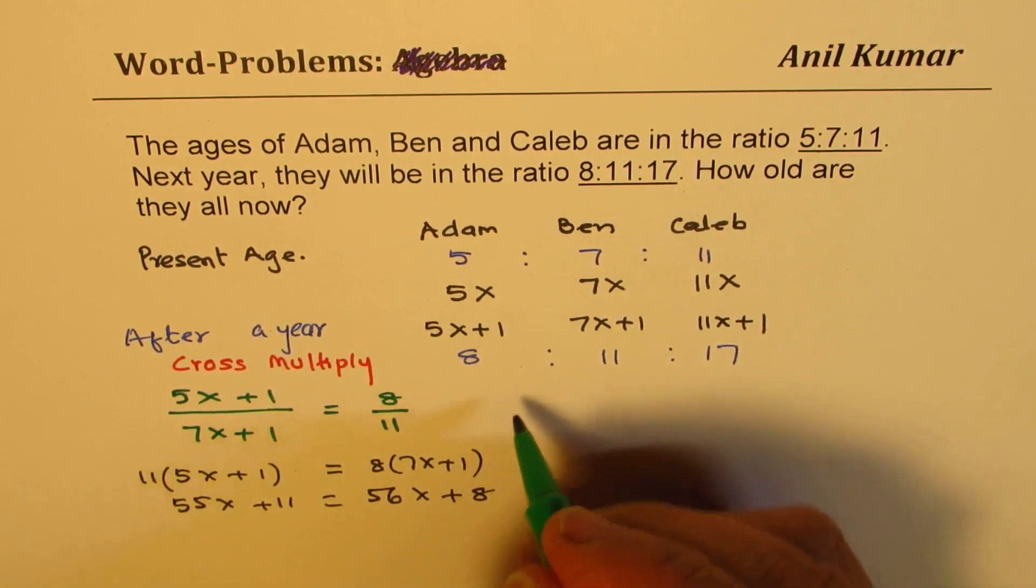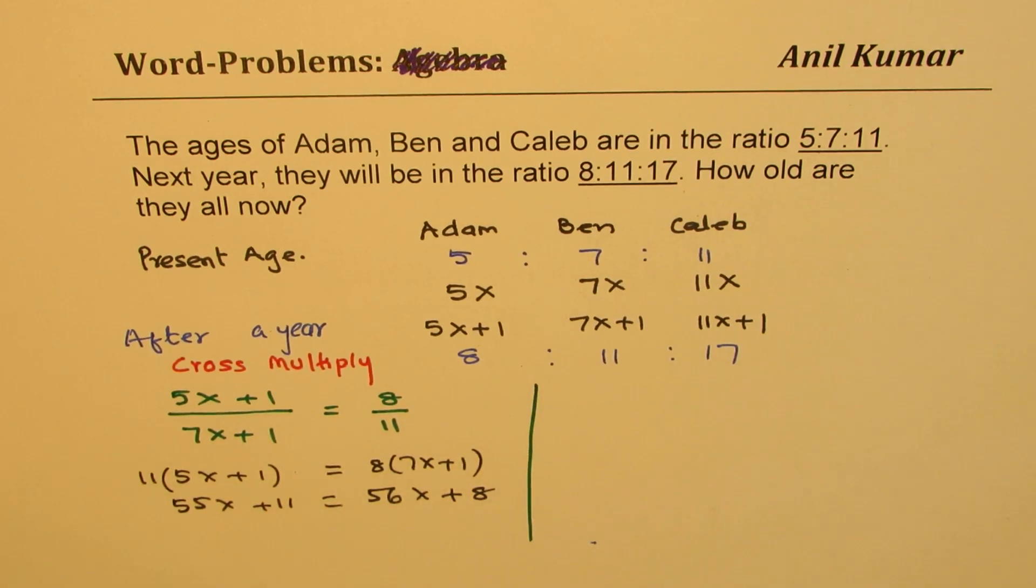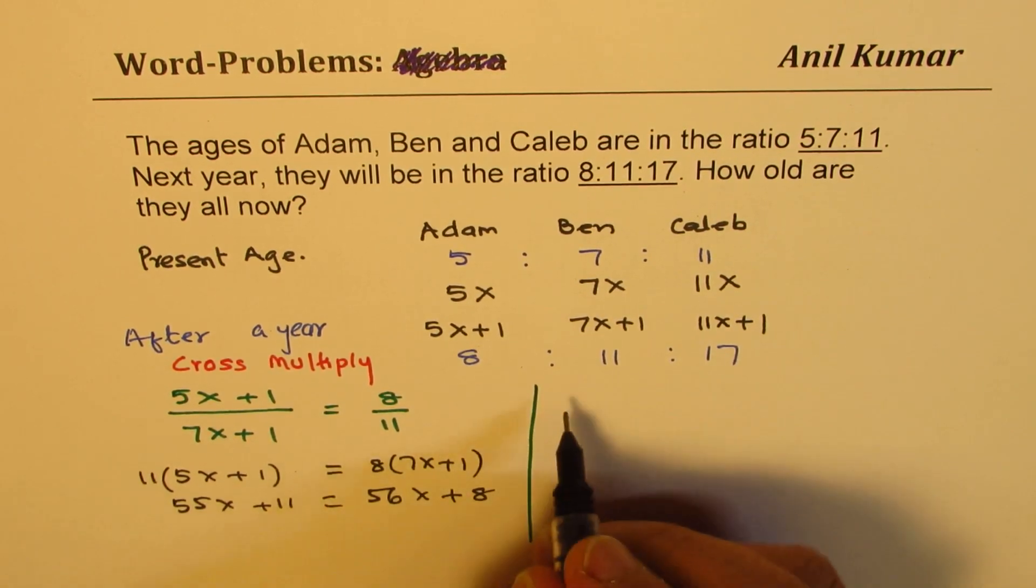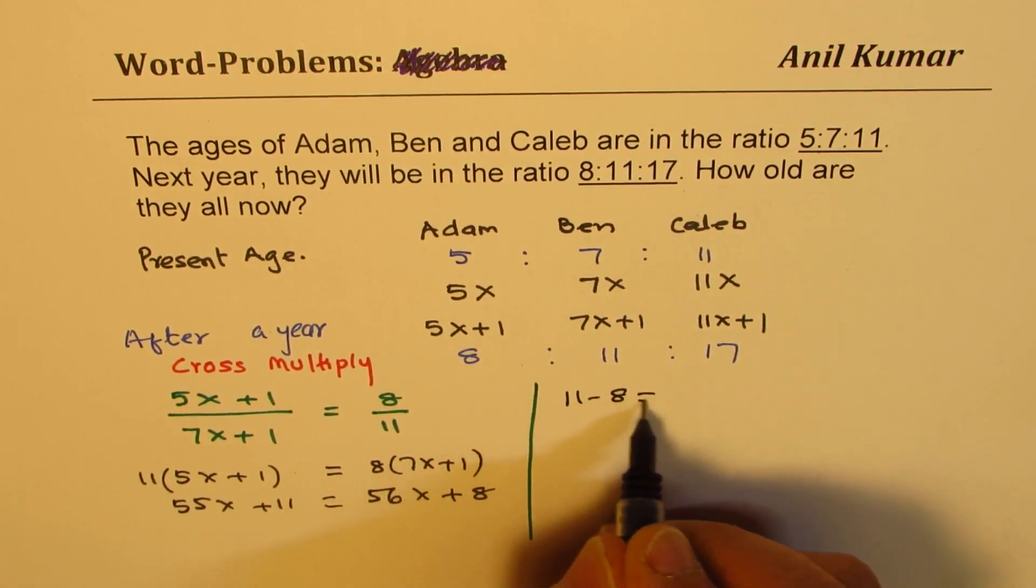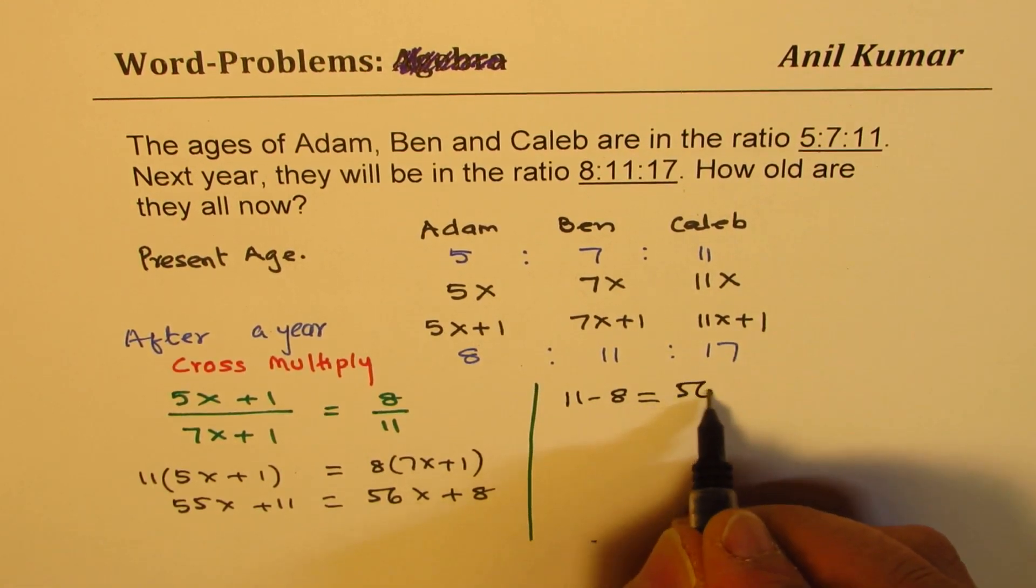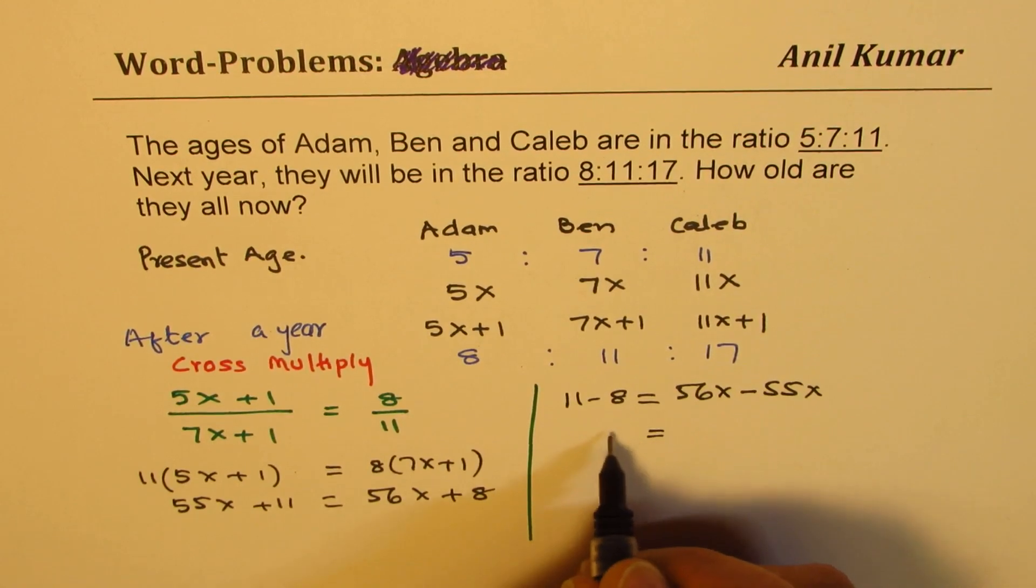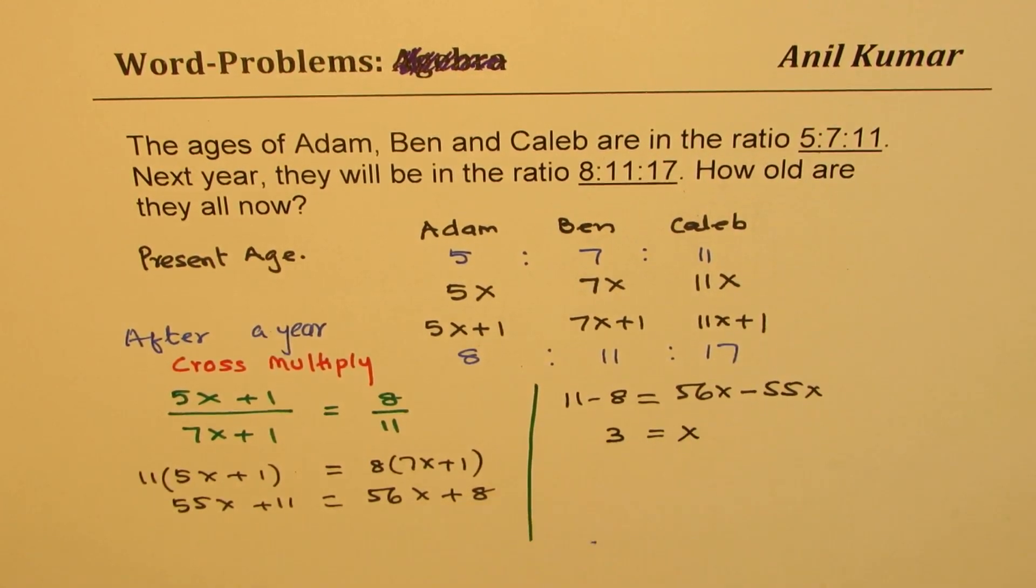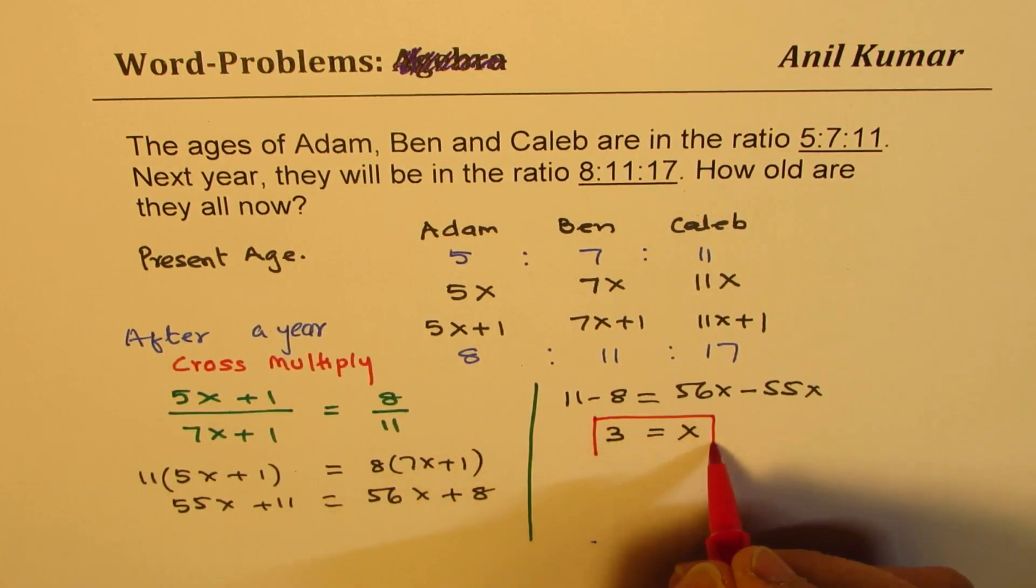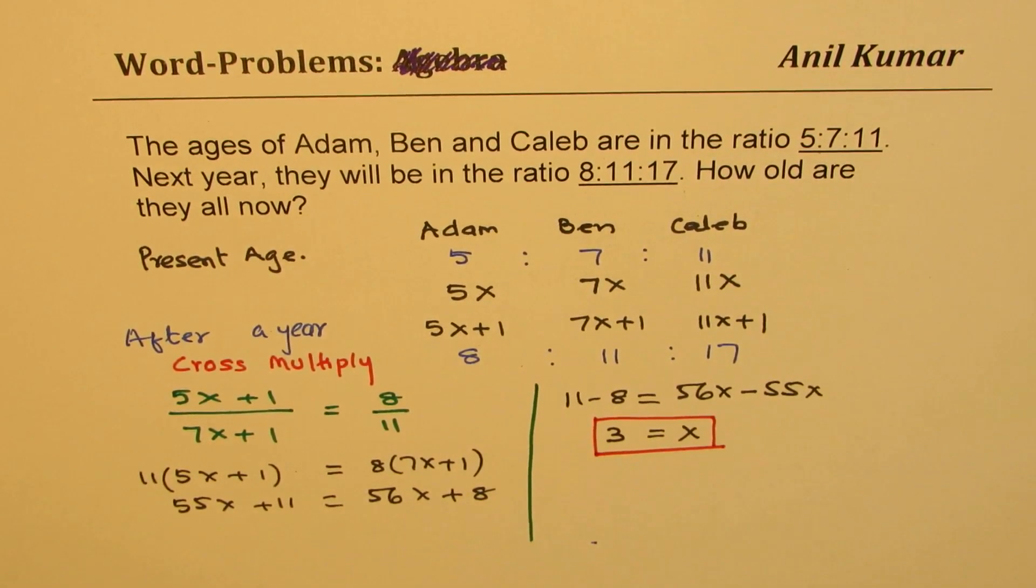Now we can take x on one side, numbers on the other. So we have 11-8 = 56x-55x or 3 = x. So we get our solution, we get the value of x as equal to 3. So that is how we could find it.